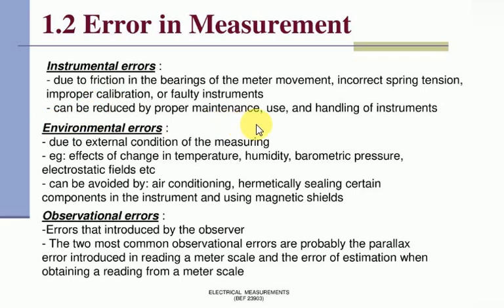Environmental errors due to the external condition of the measurement. Example: effect of change in temperature, humidity, barometric pressure, electrostatic fields, etc. Environmental error can be avoided by air conditioning, hermetically sealing certain components in the instrument, and using magnetic shields.